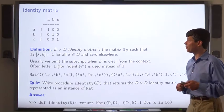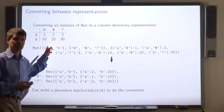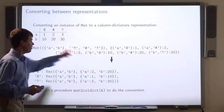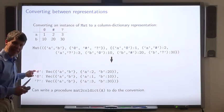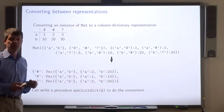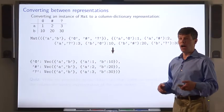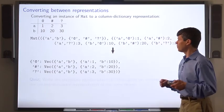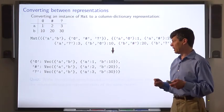Here's the solution. We can convert between our different representations of matrices. For example, consider this matrix. Here's the representation as an instance of MAT. And we can convert this to a column dictionary.